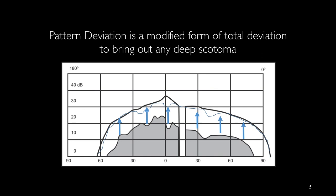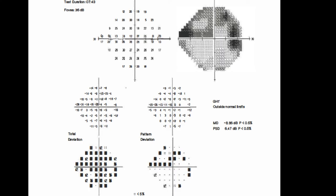This slide shows the way that the pattern deviation works. As you can see here, those points with lower threshold value will still remain below the hill of vision after adjustment, and we will see those locations as scotoma or local defect.